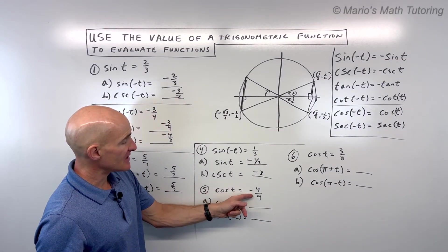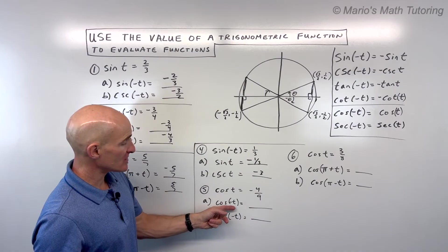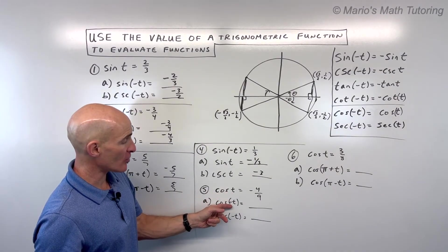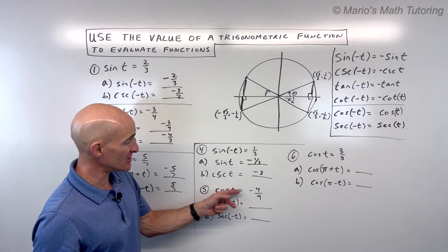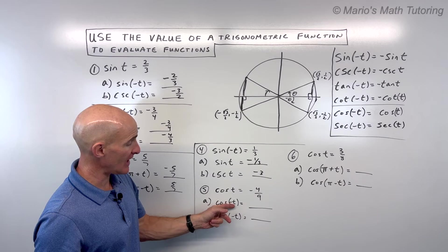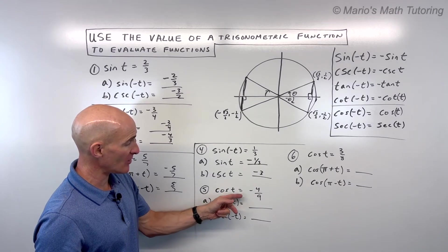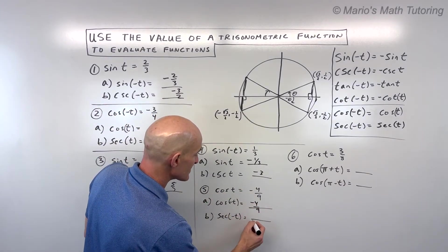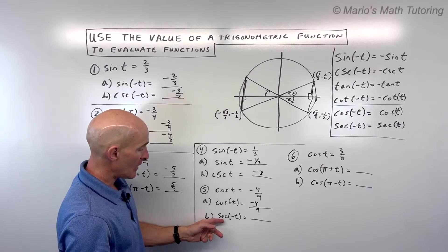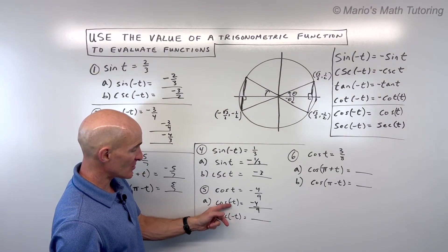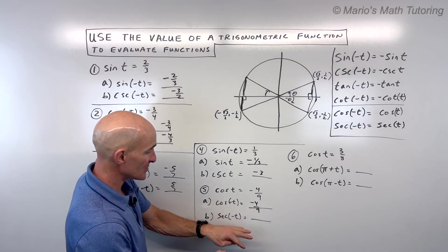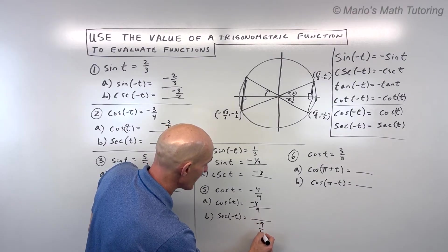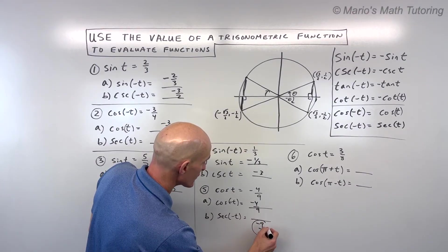Cosine of t is negative 4 ninths. What's the cosine of negative t? Remember, cosine is an even function, so cosine of negative t is going to be the same thing: negative 4 ninths. And secant of negative t is just the reciprocal of cosine of negative t, so flip that over — negative 9 fourths.